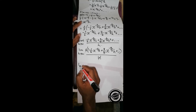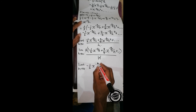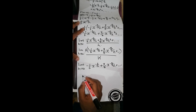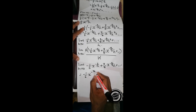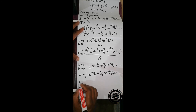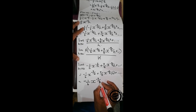We now have the limit h approaching zero of: negative one over six times x to the power negative three over two, plus three over four times x to the power negative five over two times h, plus higher order terms in h. Plugging in h equals zero, the terms containing h become zero, and we are left with negative one over six times x to the power negative three over two.